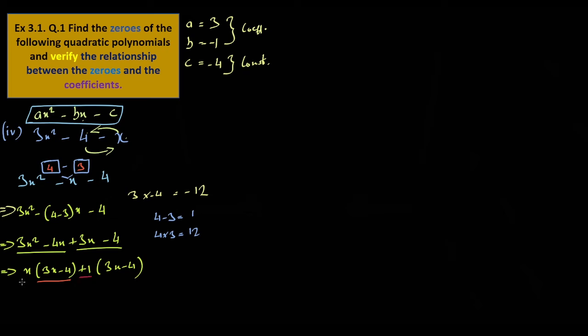Set equal to zero. x plus 1 equals zero, 3x minus 4 equals zero. So x is minus 1, and x is 4 by 3.